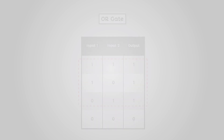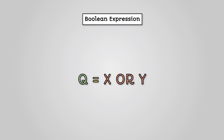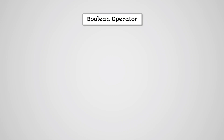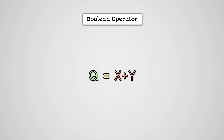If we wanted to write this as a Boolean expression, we can write it as Q equals X OR Y. The Boolean expression operator for an OR gate is a plus symbol, so our Boolean expression written using a Boolean operator would be this.